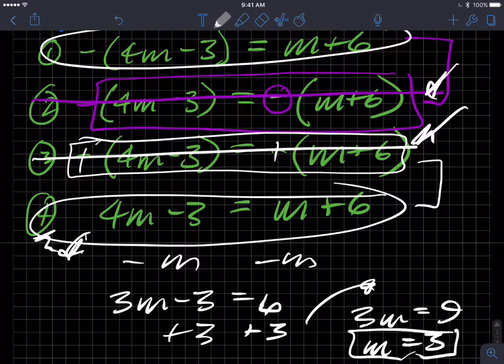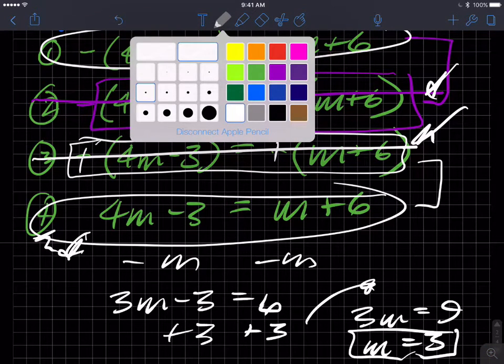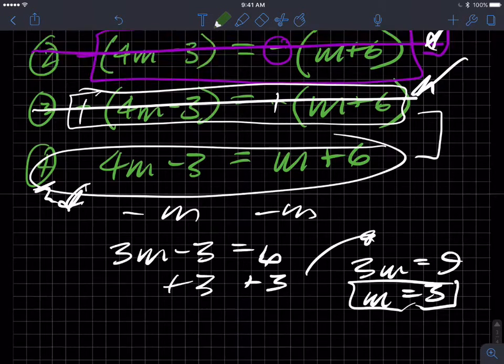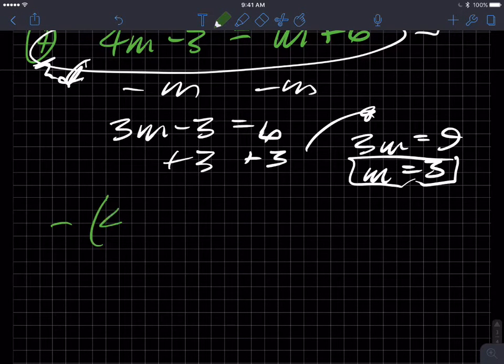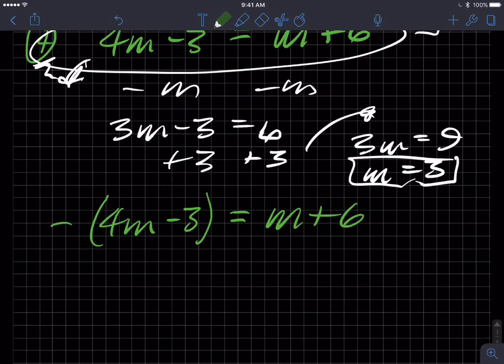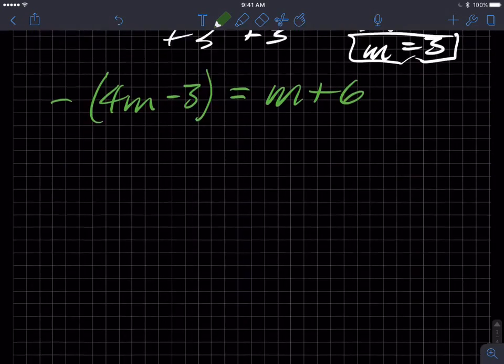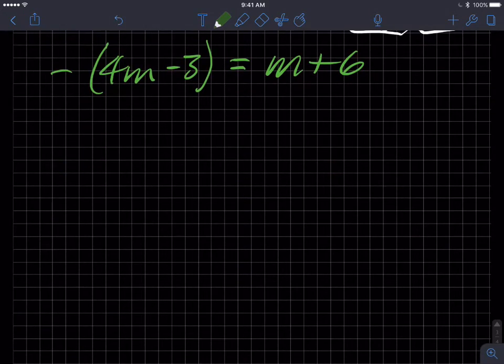So that's one of the two possible solutions. And then this guy is negative, I'm going to have to copy it again. Negative quantity 4m minus 3 equals m plus 6. Okay, so then if we go to solve this one, I'm going to distribute this negative sign, and so I'm going to get negative 4m. That's like having a negative 1 there, recall. And I'm going to add 3.